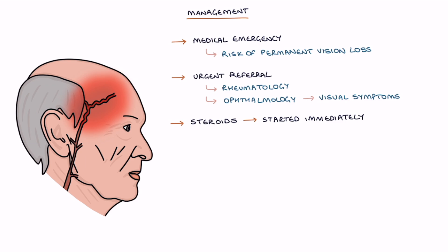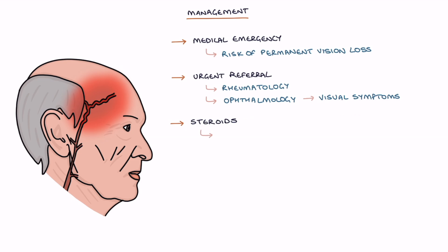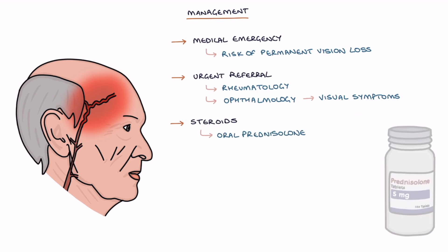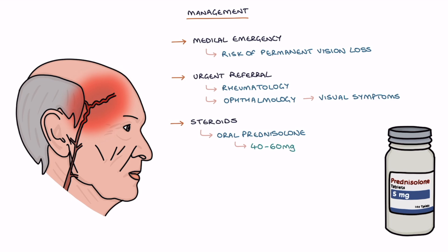Initially, giant cell arteritis is treated with very high dose steroids, and even higher doses are used when there are visual symptoms or jaw claudication. The options include oral prednisolone, typically 40–60mg daily — even up to 100mg daily with vision loss — or intravenous methylprednisolone, which may be used if the patient has vision loss.